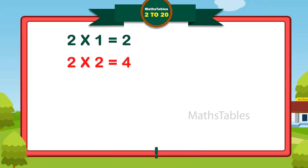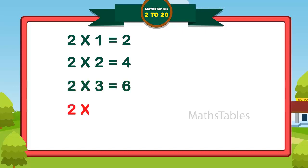Two threes are seven. Two threes are seven. Two ones are eight. Two fours are eight.